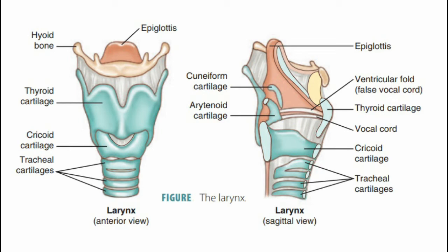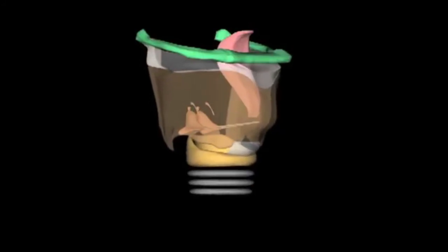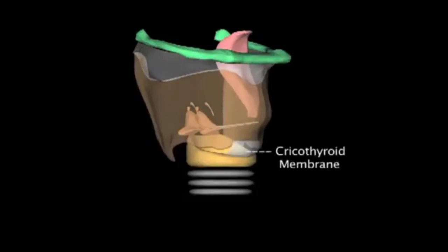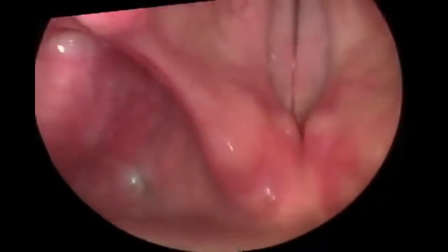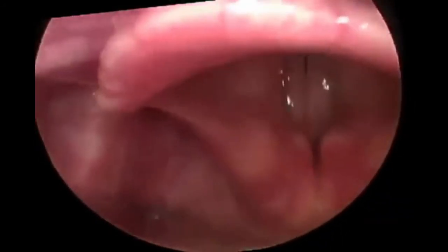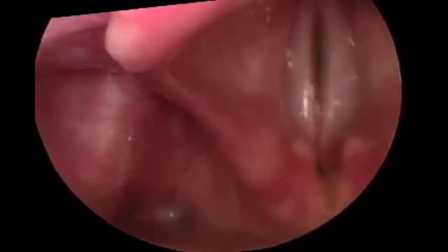Both men and women have an Adam's apple, although it is typically more pronounced in men. As a little test, place your fingers on your Adam's apple and hum a tune, first in a low pitch and then in a high pitch. You should be able to feel the thyroid cartilage actually move. The cricothyroid muscle produces tension and elongation of the vocal cords, and it is this process that produces a higher-pitched cadence.